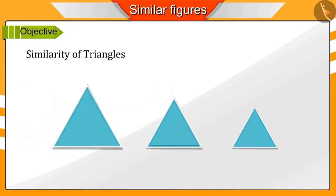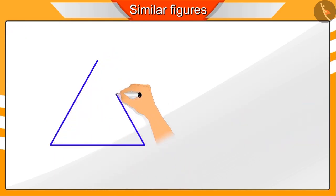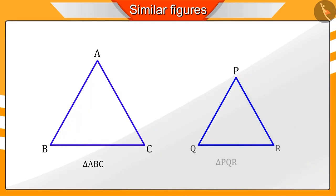We'll learn about the similarity of triangles. Here, we have two triangles ABC and PQR.